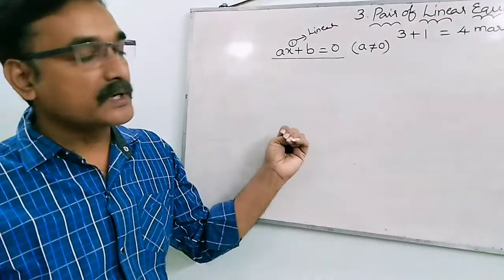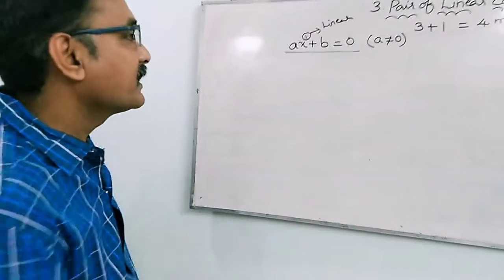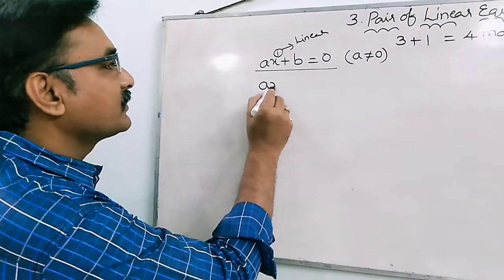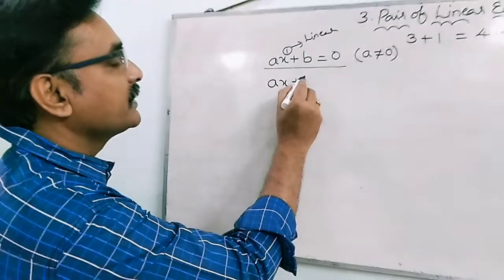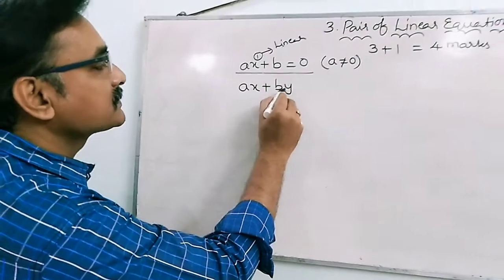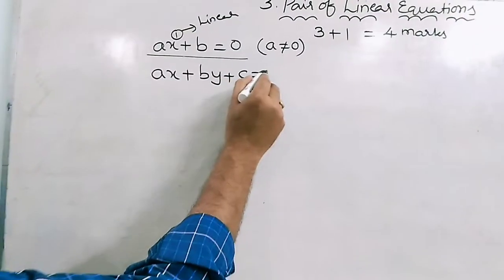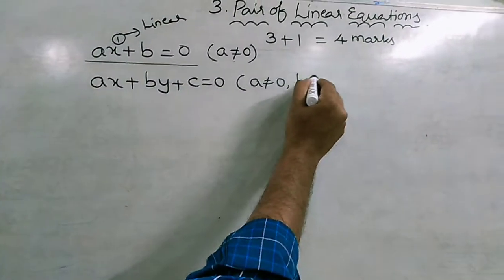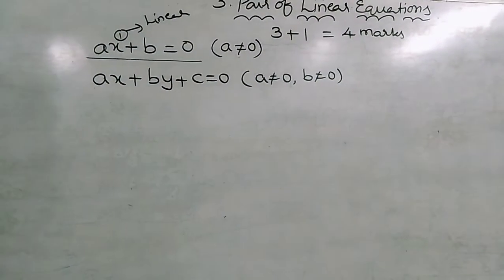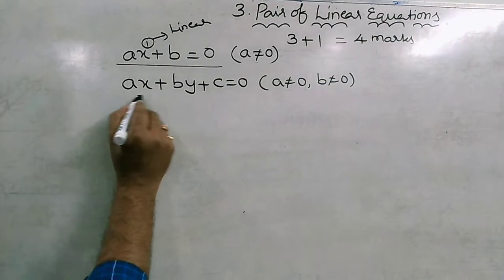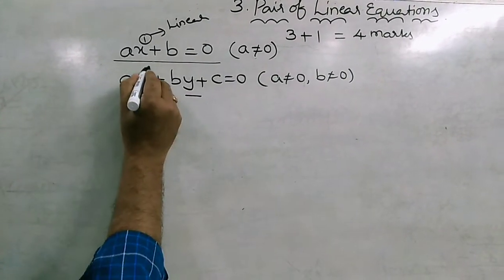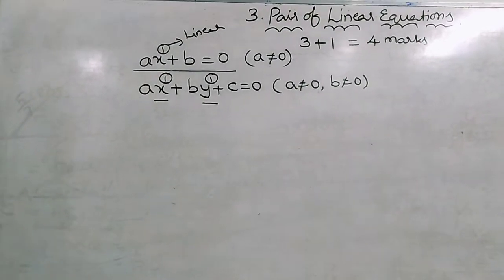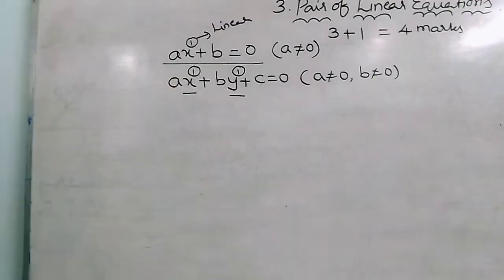When we enter into class 9, we have linear equations in two variables. The general form of a linear equation in two variables is ax plus by plus c equals to 0, where a is not equal to 0 and b is not equal to 0. Since here we are having two variables and the highest exponent is equal to 1, it is called a linear equation in two variables.